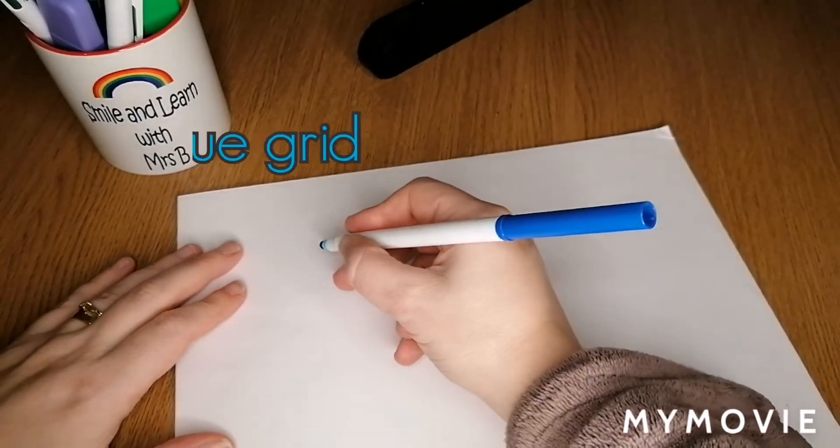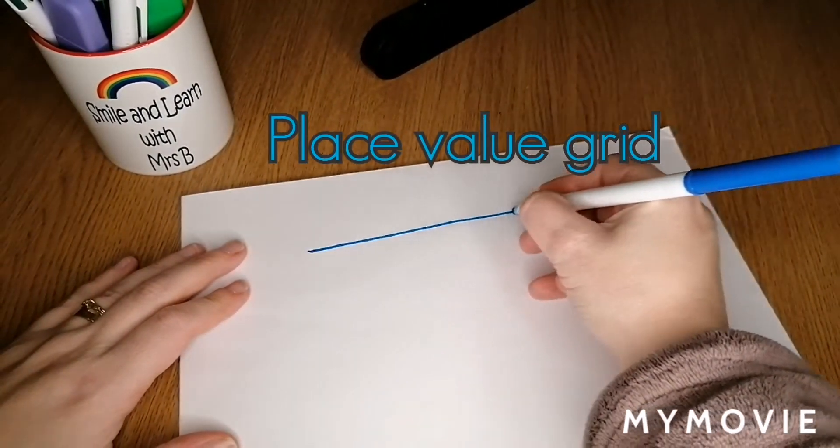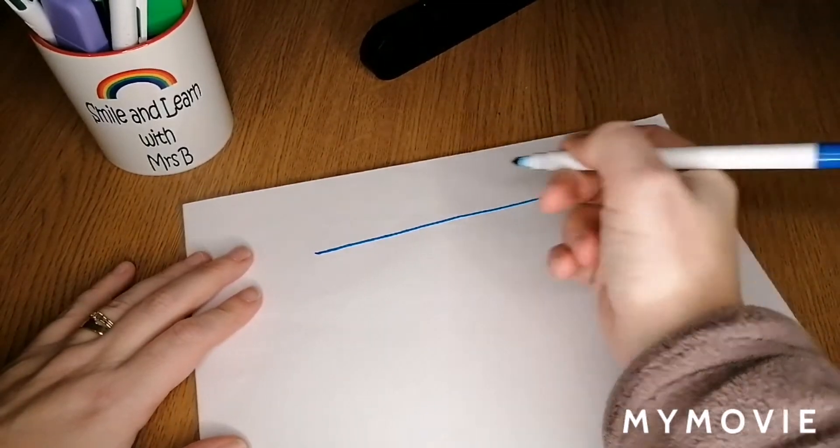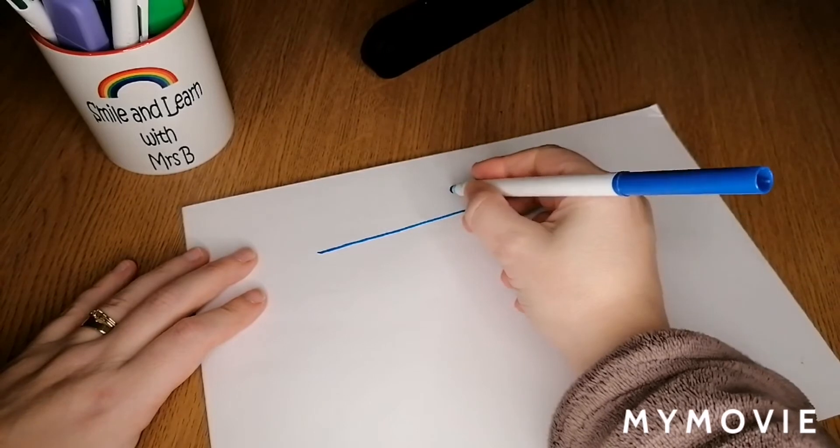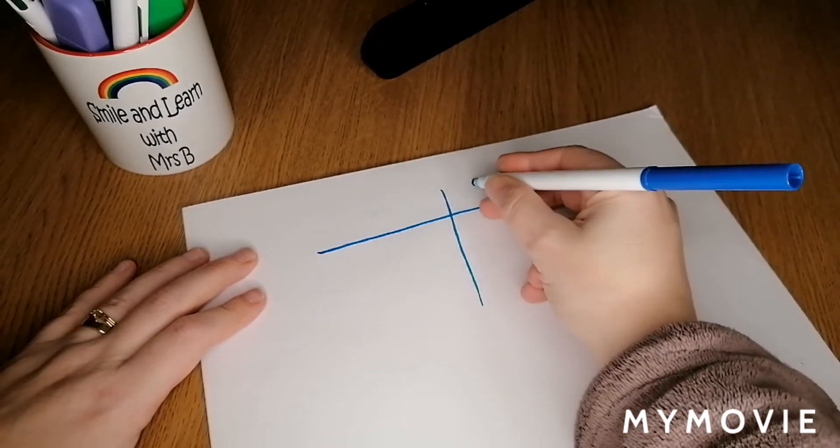This is a place value grid which a lot of children might use in Key Stage 1, but also in Key Stage 2, particularly if their place value is not strong. With a place value grid, there are different variants of it.